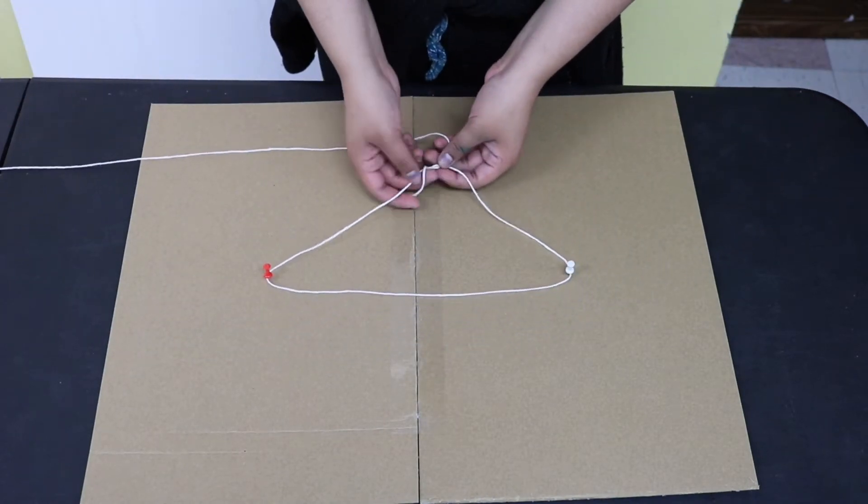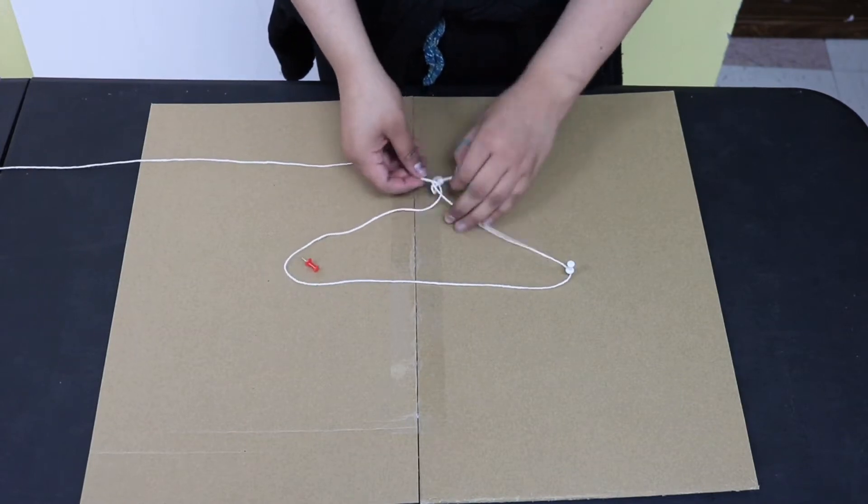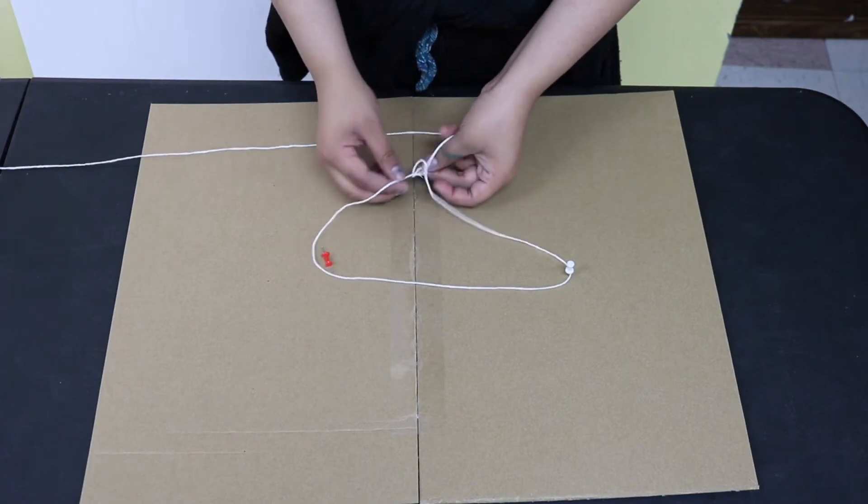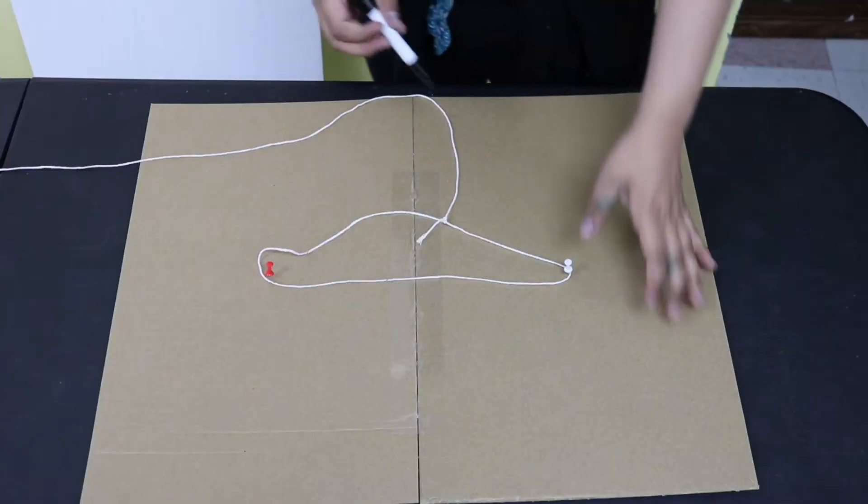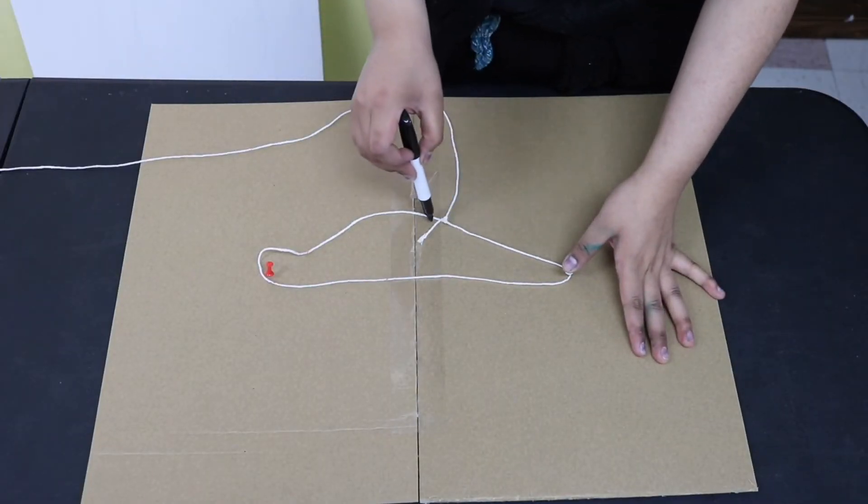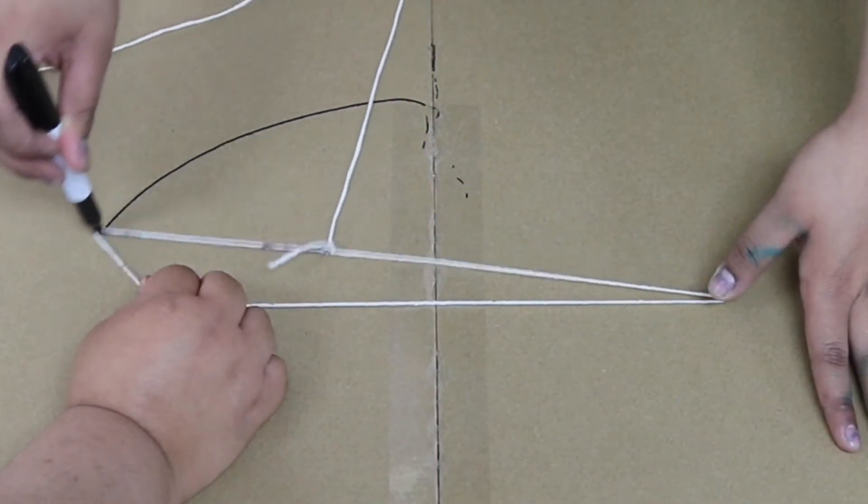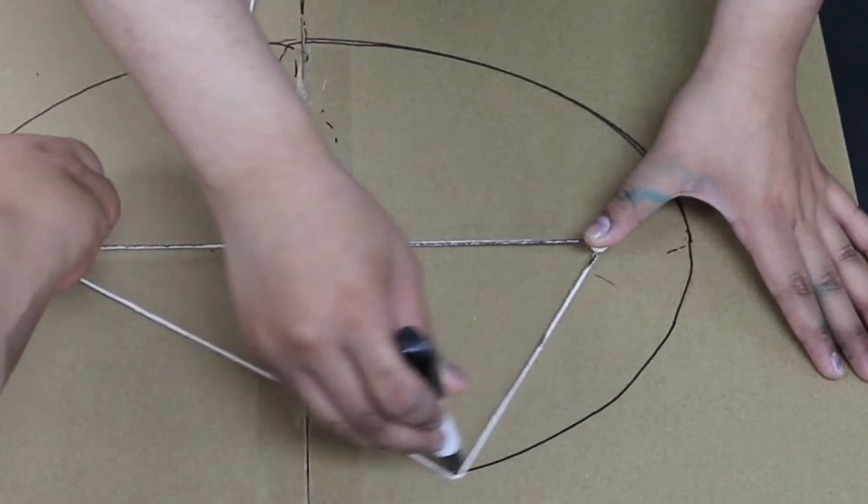Next, get your piece of string. Wrap the string around the push pins and leave a little bit of extra space, almost like you're about to create a triangle. Make a knot, and once it's secure, grab your marker. With your marker, pull the string outwards. Use the string and marker almost like a compass to create your oval. Make sure you're happy with the shape and size of your oval because this is what we'll be using for your pool table.